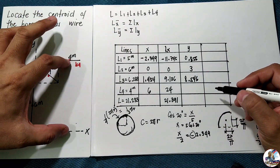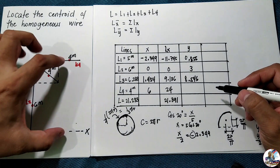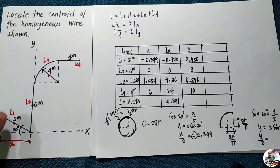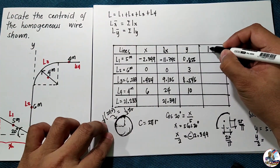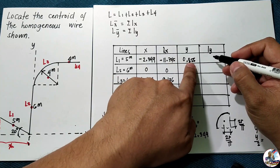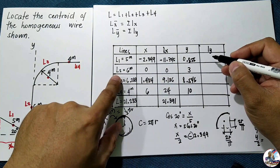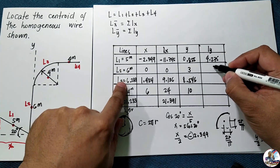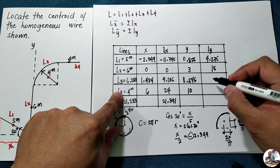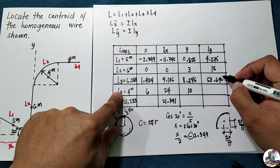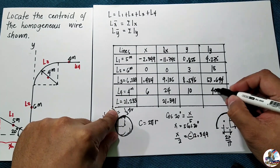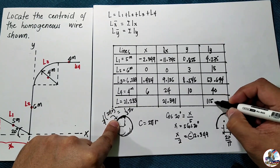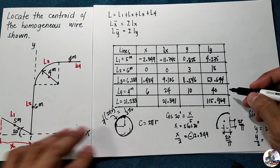For the four-meter line L4, the y-distance of its centroid from the x-axis is 6 plus 4, giving 10 meters. Multiplying lengths by y-distances: L1 gives 4.275, L2 gives 18, L3 gives 53.694, and L4 gives 40. The total summation of L·y equals 115.969.